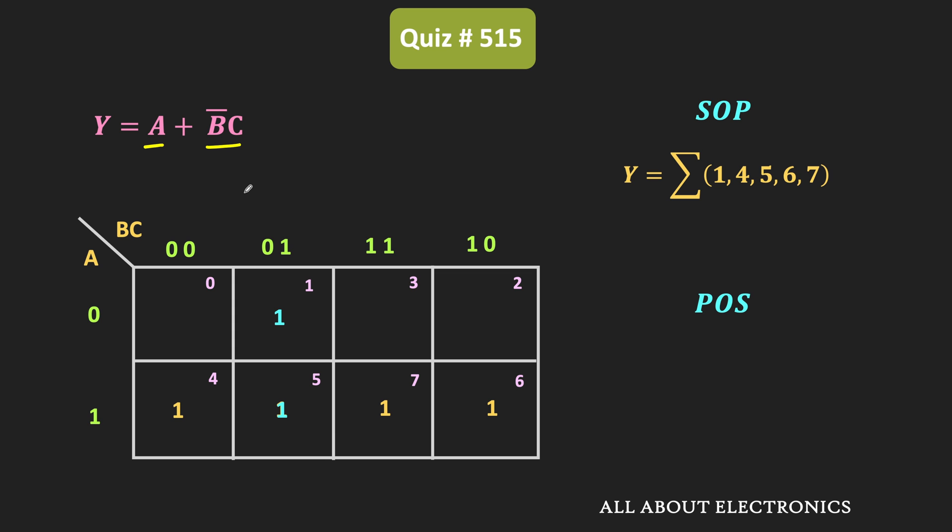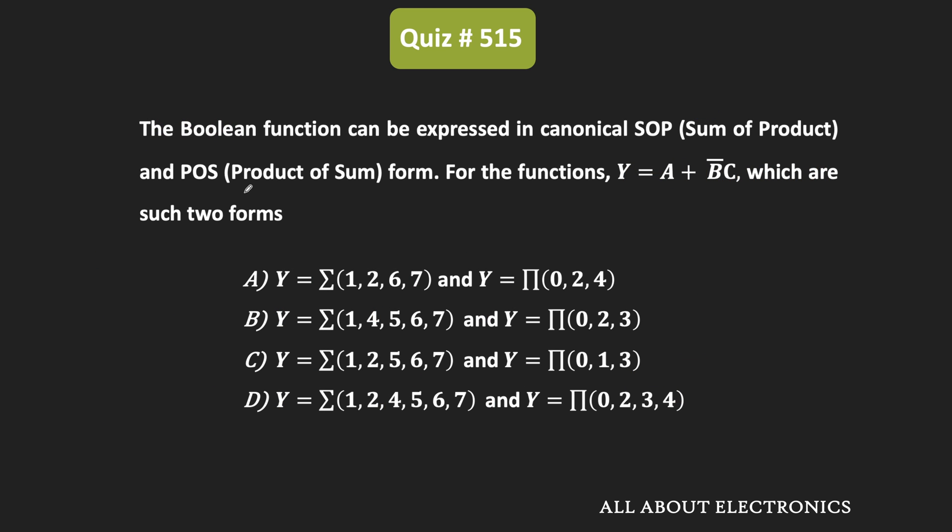In canonical Product of Sum form, it will contain these three max terms. In this way, the given function can be represented in canonical SOP and POS forms. Therefore, for the given question, option B is the correct answer.